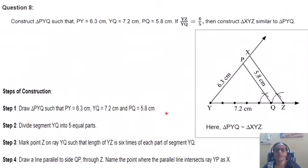Draw triangle PyQ. YQ 7.2 cm. With Y as a center and radius YP 6.3 cm, draw an arc. With Q as a center and radius 5.8 cm, you get point P.